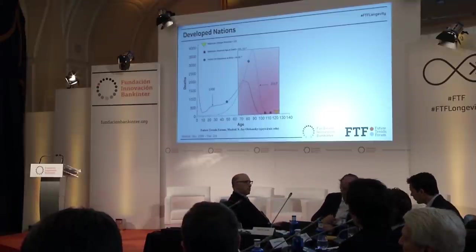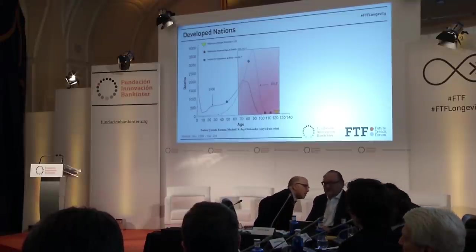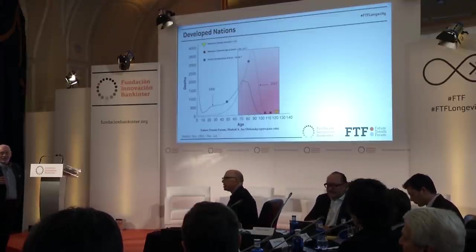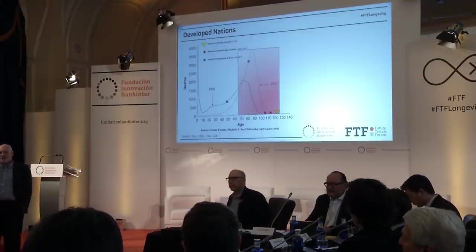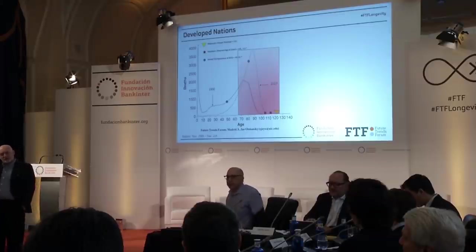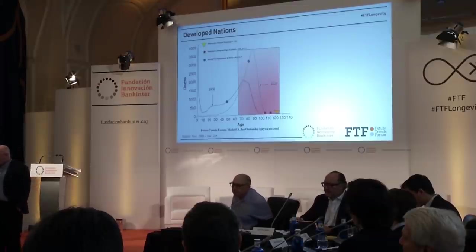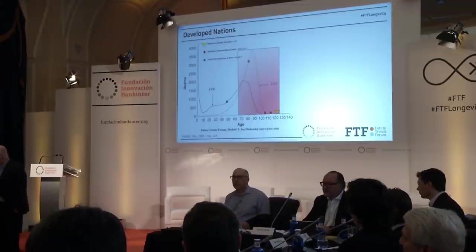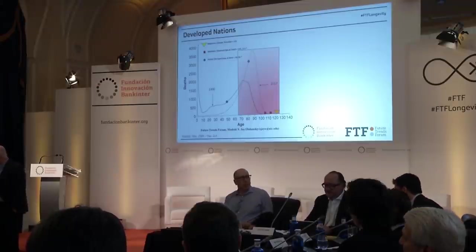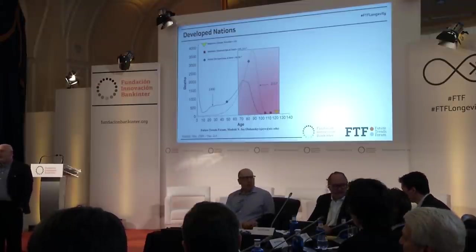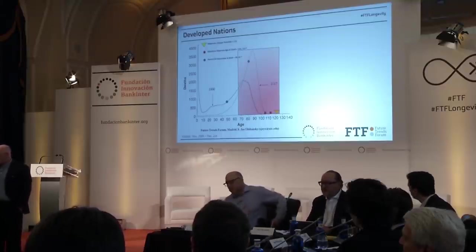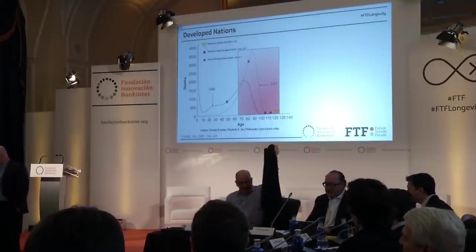Think of it this way: if you took 100,000 babies born in a given year and you applied to those babies the death rates at all ages, and you plotted out the ages at which they all died, you would get a distribution of death. The area under the curve is the same no matter when you look at it. It tells you a critically important story about where we've come from, where we are, and where we're headed.